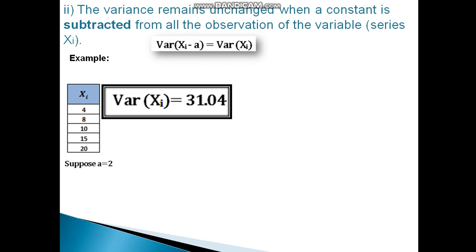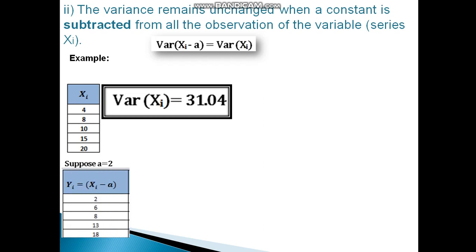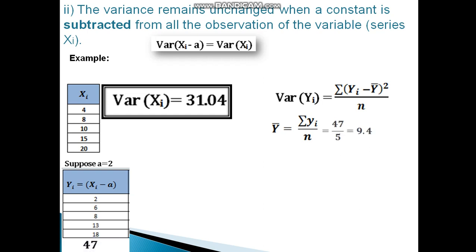Computing xi minus 2: 4 minus 2 is 2, 8 minus 2 is 6, 10 minus 2 is 8, 15 minus 2 is 13, 20 minus 2 is 18. The variance formula gives: y-bar equals sum of yi divided by 5, so 47 divided by 5 equals 9.4. The sum of squared deviations (yi minus y-bar) squared equals 155.2. Variance equals 155.2 divided by 5, which equals 31.04.